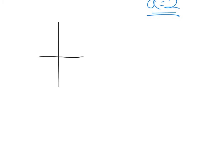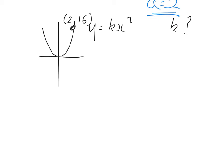Question 2 — very similar. This time instead of Ax squared, I'll call it Kx squared, and we're looking to find K. The curve passes through the point (2, 16). So when x is equal to 2, y is equal to 16. I can sub that straight in.